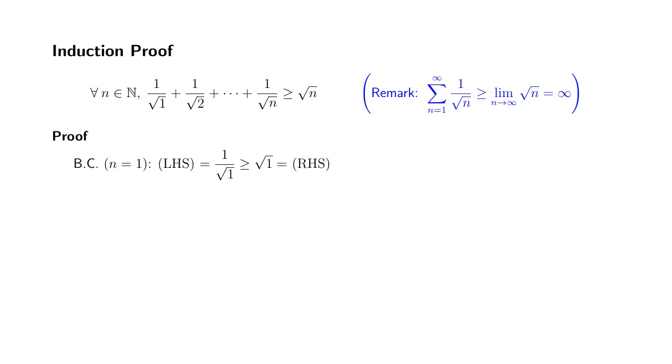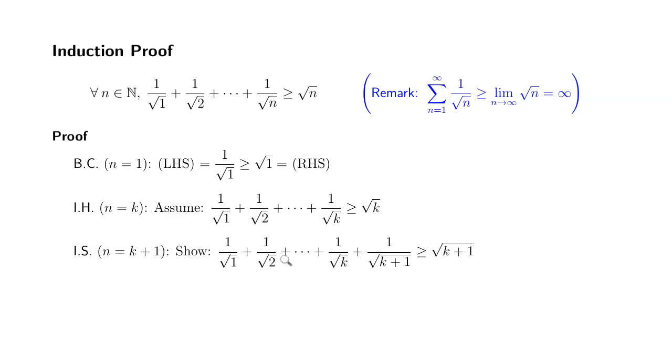So base case checks out and then we're gonna state the induction hypothesis. When n equals k the statement is true. Then induction step. So we are trying to establish that when n equals k plus 1 the inequality is still true.